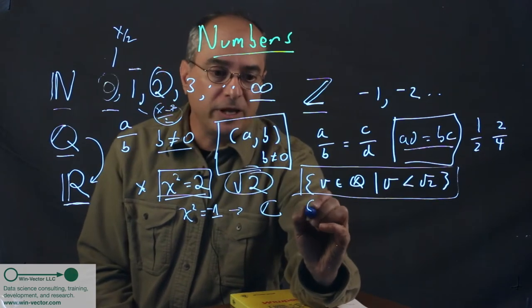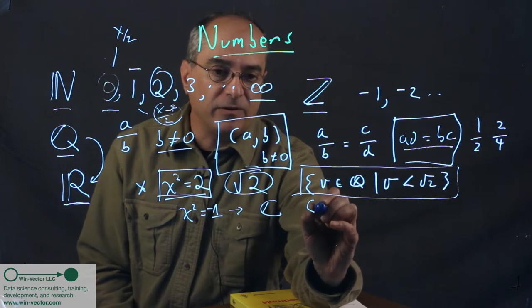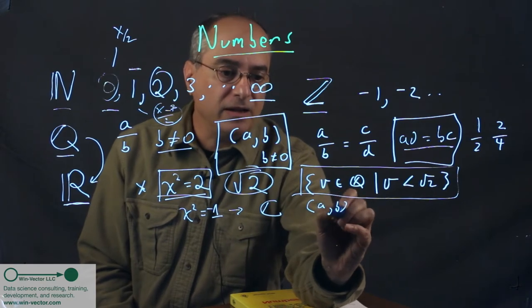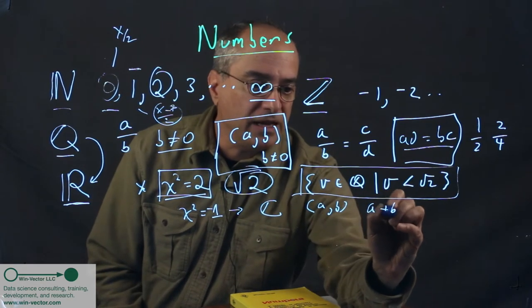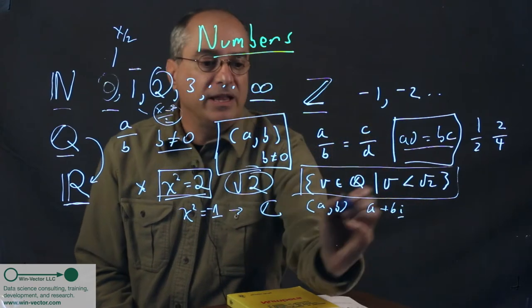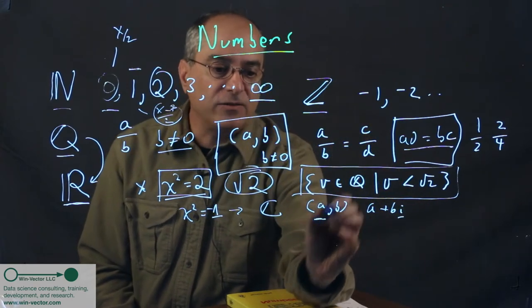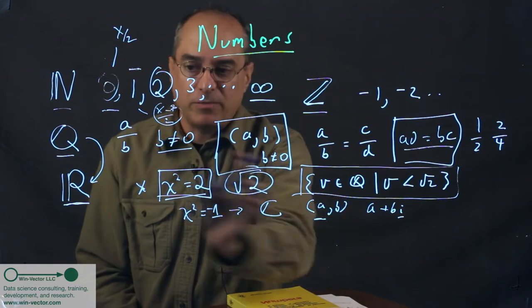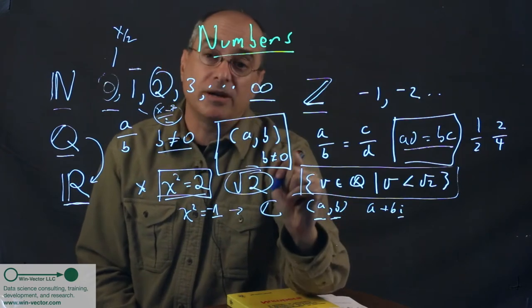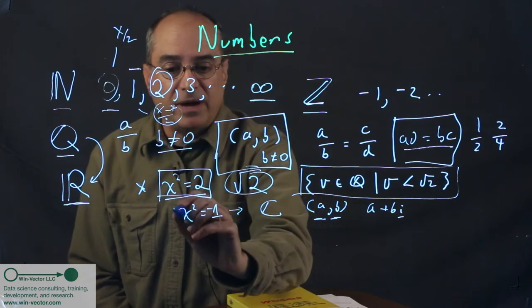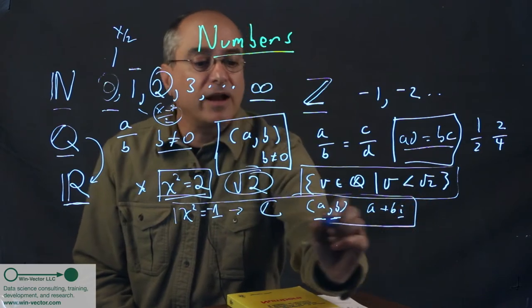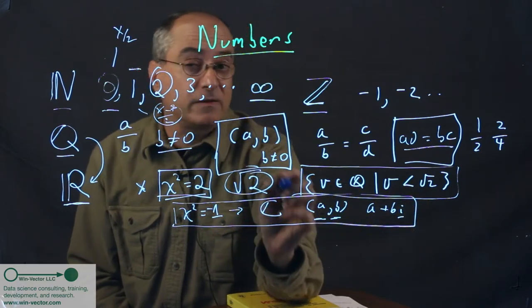And those are formally pairs of numbers A, B, usually written as A plus B i, where i is just a symbol. And A is the real part. These two entries are both taken from the reals, and B is the imaginary part. So that buys you a lot. A lot of mathematics based on that. Pretty exotic system, the complex numbers.